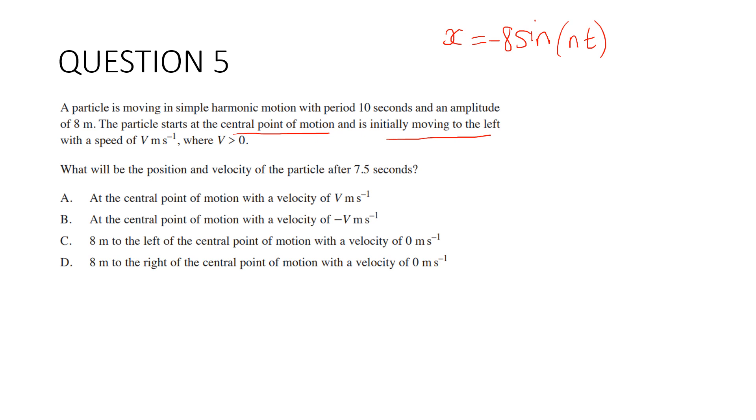So x equals negative a sine nt. The a is the amplitude and we know the amplitude is 8. We need to work out what n is. The period is 10, so 10 equals 2π over n. So n equals π over 5. And so x equals negative 8 sine (π/5)t. What would be the position and velocity after 7.5 seconds?